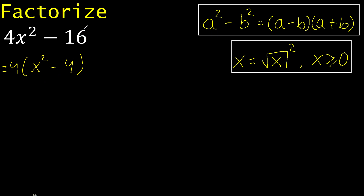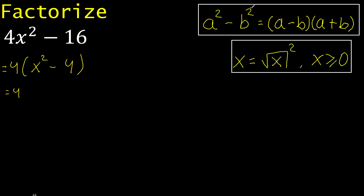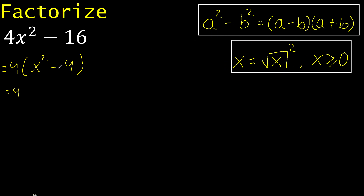4 multiplied by 4 is 16. Exponent 2 — here there is not exponent 2, therefore like this.